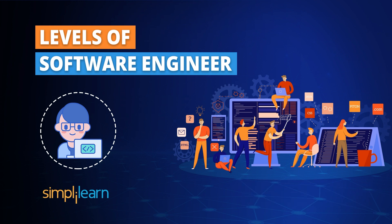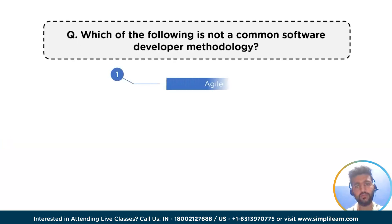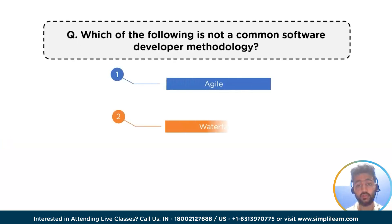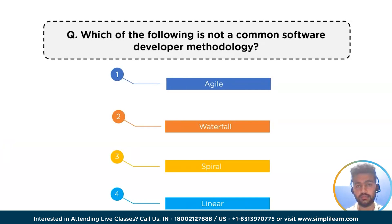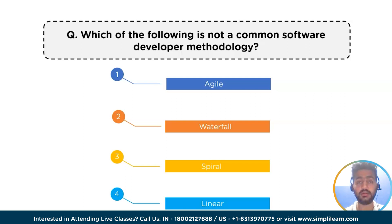Before moving on, let me ask you a quick question. Which of the following is not a common software development methodology? A. Agile, B. Waterfall, C. Spiral, or D. Linear. You can write your answers in the comment section below.